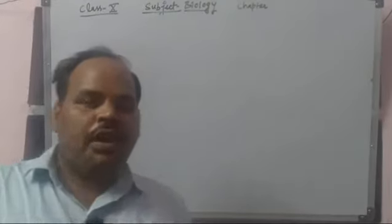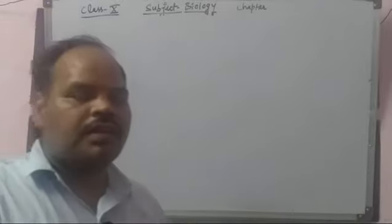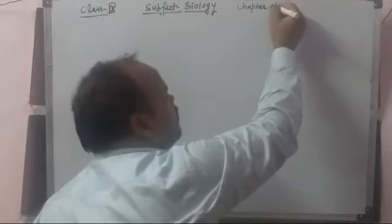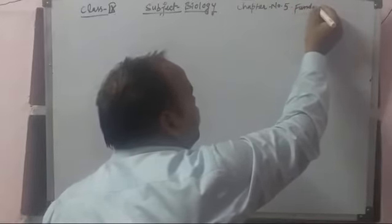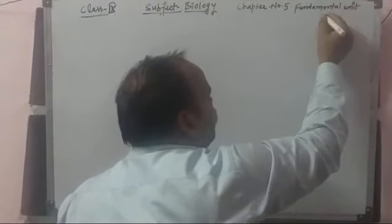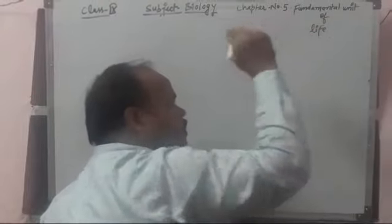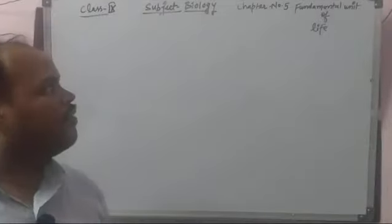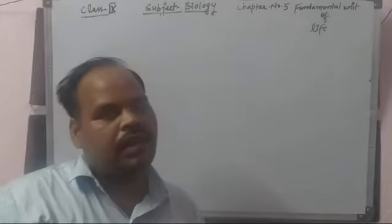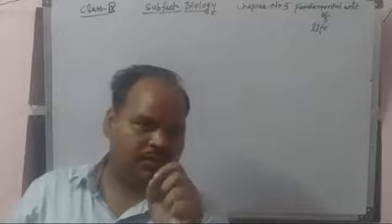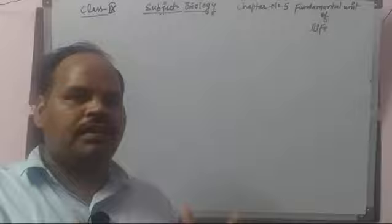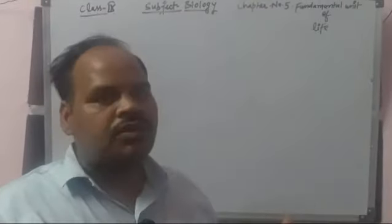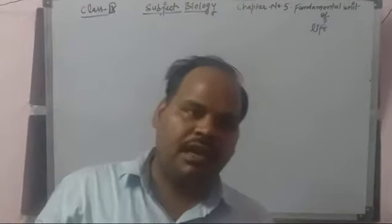Good morning students. Today we are starting Chapter 5: Fundamental Unit of Life. Before this class we have taken some parts of this chapter and we discussed the introduction about the cell. The cell is the unit of life — all animal bodies are made up of units called cells. We discussed the shape, size, and history of the cell.